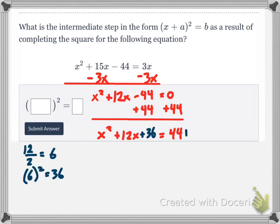That's what I need to do to complete the square. So what do I have to do? I divide that 12 by 2, and that equals 6, and I'm going to square that. So 6 squared equals 36, and then I add that to both sides of the equation. So that's x squared plus 12x plus 36 equals 44 plus 36. What is that? That's 80.